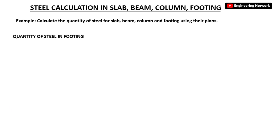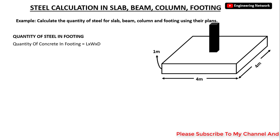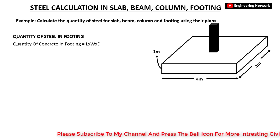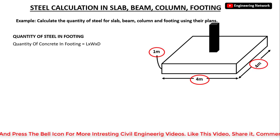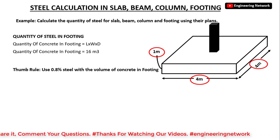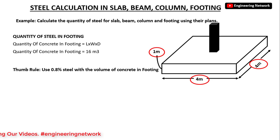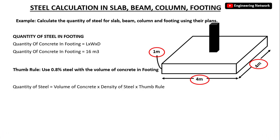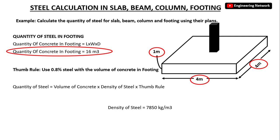Next is the Footing. The volume of concrete in Footing = length × width × depth = 4 × 4 × 1 = 16 cubic meters. The Thumb Rule for Footing states: use 0.8 percent steel with the volume of concrete. So the quantity of steel = volume of concrete × density of steel × thumb rule = 16 × 7850 × 0.008 = 1004.8 kg.